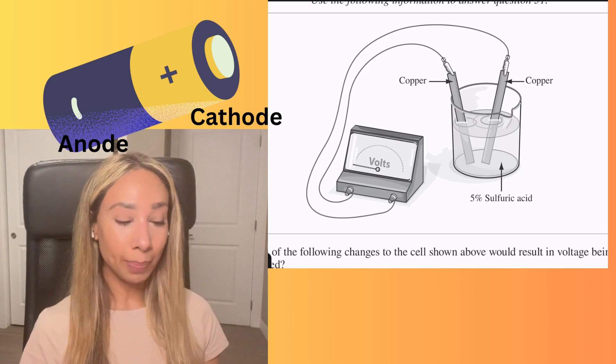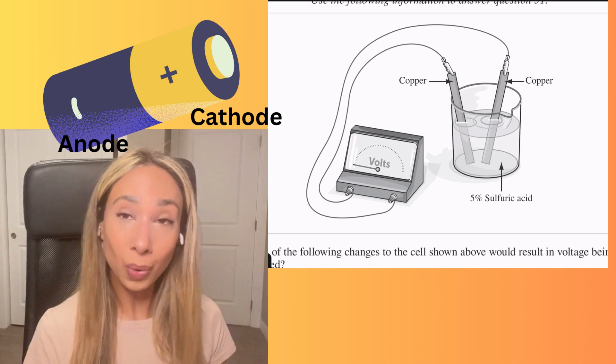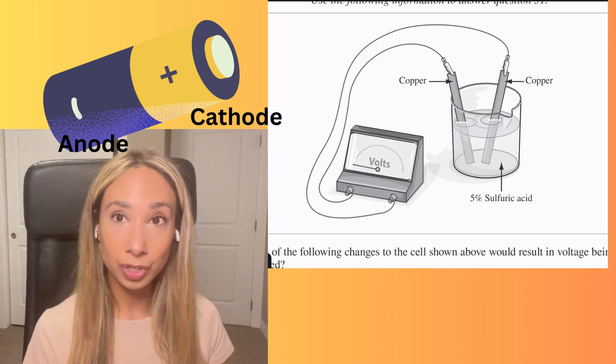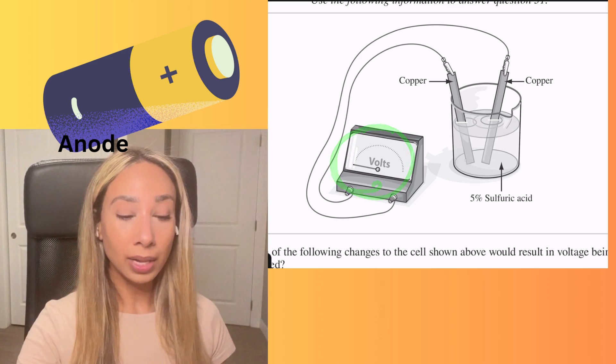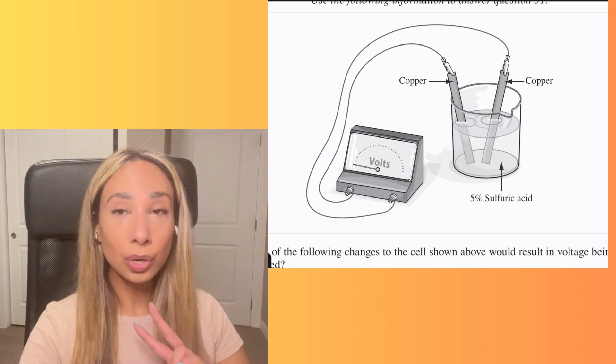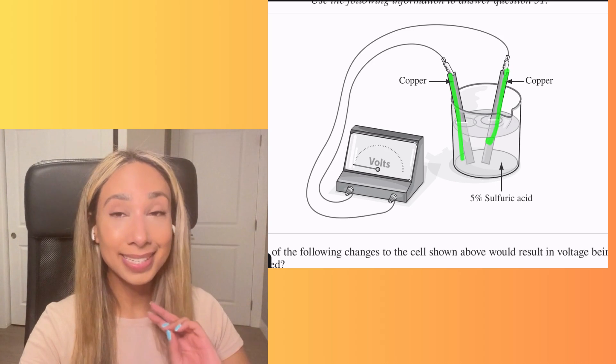Generating a current that can power the toy. In this example, same idea, we're just not powering a toy, we're measuring the voltage. So what's interesting about this is they chosen two electrodes that are the exact same.